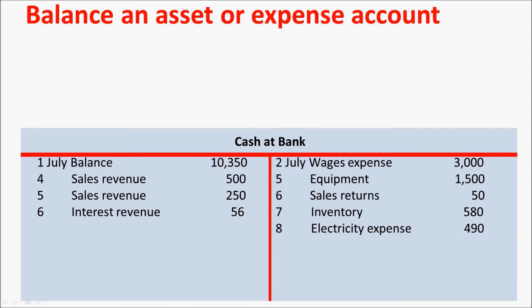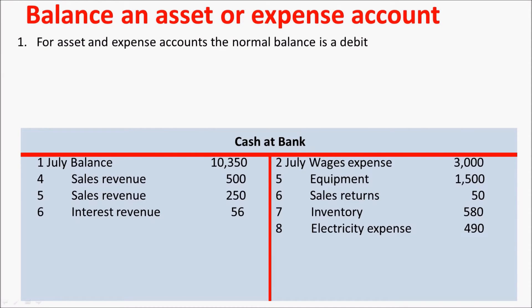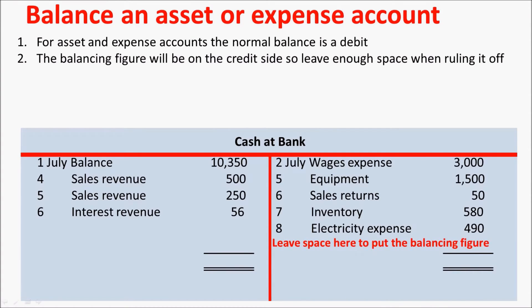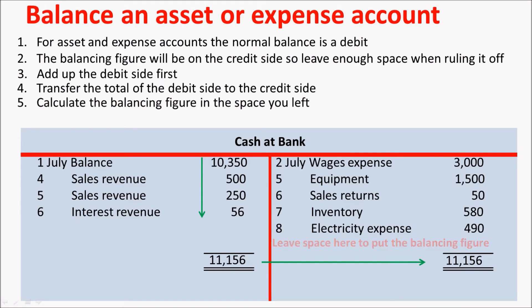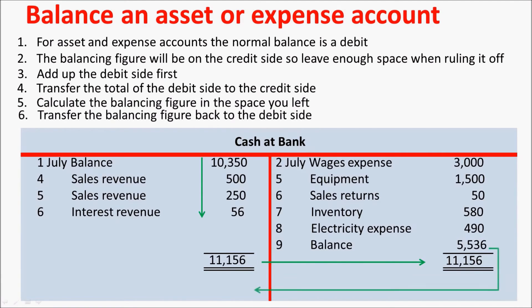Asset and expense accounts are the same in that their normal balance is on the debit side. So when ruling off the account, make sure you leave enough space on the credit side for the balancing figure. Add up the debit side first, then transfer that amount over to the credit side. Calculate the balancing figure in the space that you have left. This is the balance that you then bring down to the debit side.